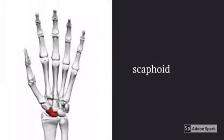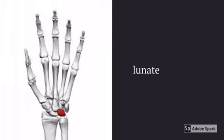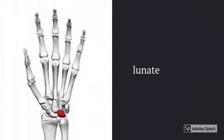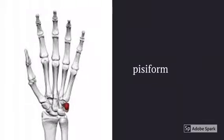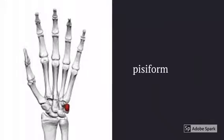This is the scaphoid. This is the lunate. This is the triquetrum — note that it is underneath the pisiform. This is the pisiform; notice it's P-shaped.